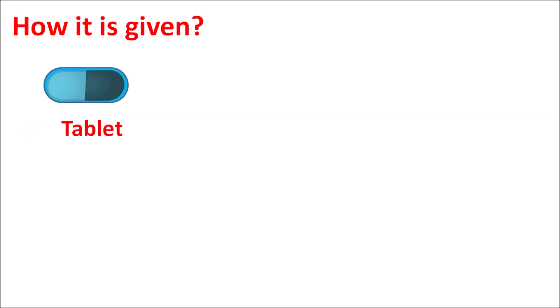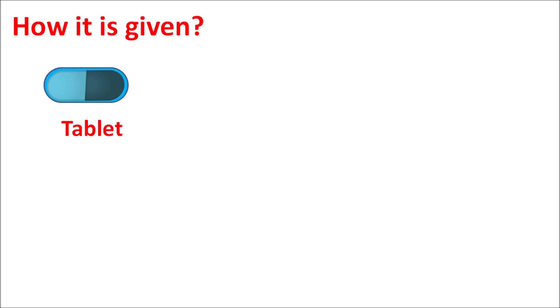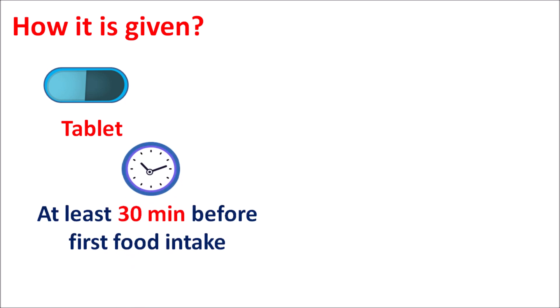This drug is available as a tablet for the management of type 2 diabetes mellitus. The tablet should be given at least 30 minutes before the first food intake, so it is typically given early in the morning. A 30-minute gap must be maintained between administration of the tablet and any intake of food or beverages. The tablet should be taken with plain water only and should not be combined with other liquids, since food can reduce the absorption of semaglutide.